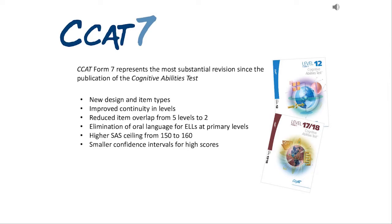There is improved continuity between levels and a reduced overlap of items, which means that when you need to, you can test students in concurrent years. We have an elimination of oral language demands at the lower levels of the test, which is particularly important for ELL learners when we are trying to understand their cognitive abilities. And we have a higher standard age score ceiling, raised from 150 to 160, which is particularly important for school boards using this as part of their gifted or talented selection tool.